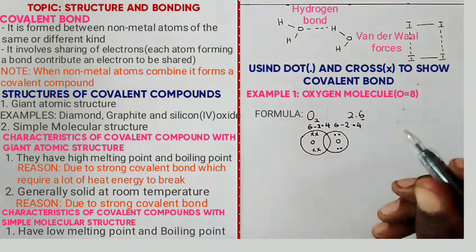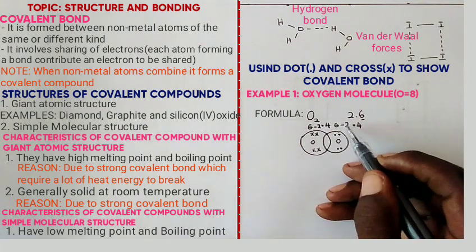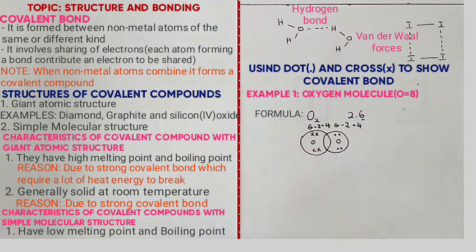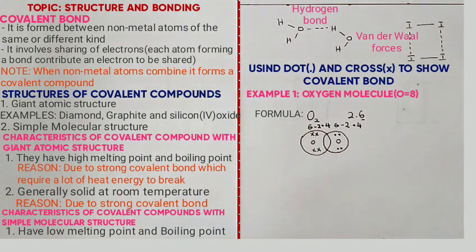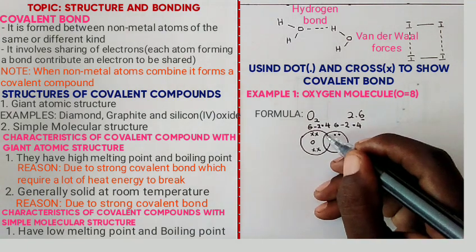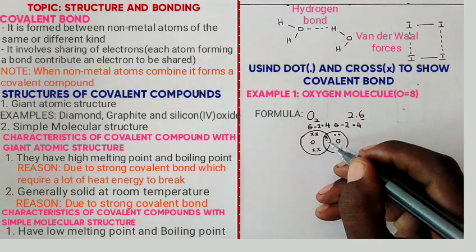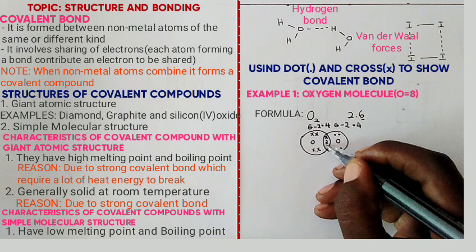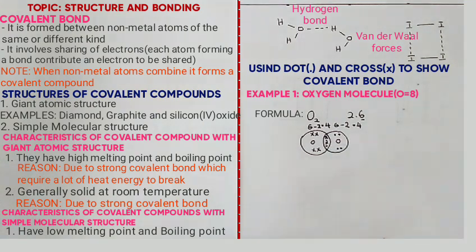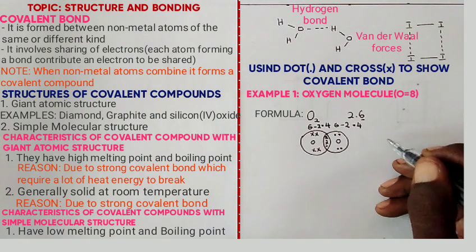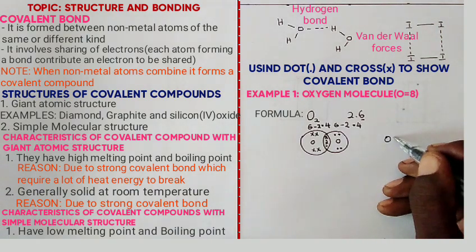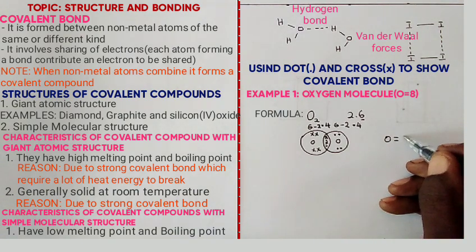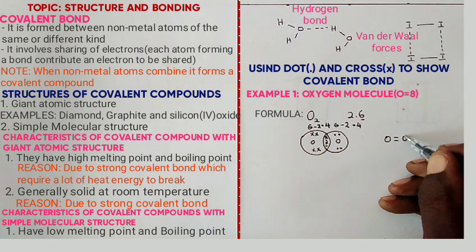Now, these two electrons and these two electrons are shared between the atoms — removing one cross and one dot pair at a time. One cross, one dot; one cross, one dot. This is equivalent to a double covalent bond, shown as O=O, meaning a double covalent bond. That is the oxygen molecule.